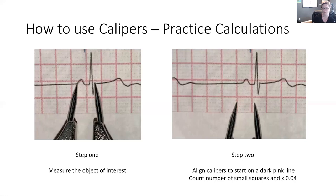Alternatively, you can just count how many small squares there are and multiply by 0.04. There are six small squares: six times 0.04 is 0.24 of a second.